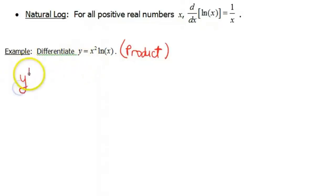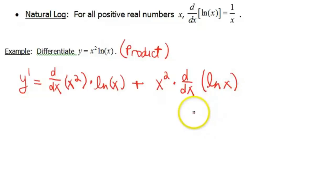So the product rule says y prime is gonna be the derivative of one function times the other, plus, and then kinda mix them up. So we'll do the derivative with respect to x of x squared, and that's an old friend, times ln of x. And then plus, we're gonna leave x squared alone and multiply by the derivative with respect to x of ln of x.